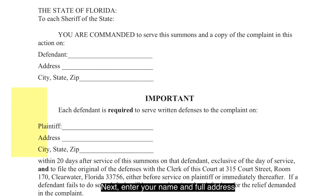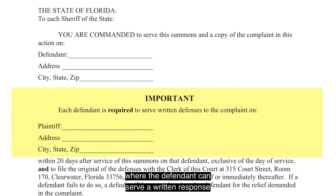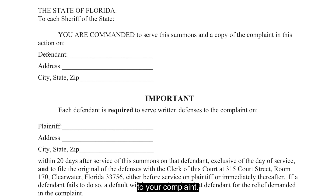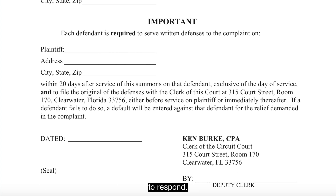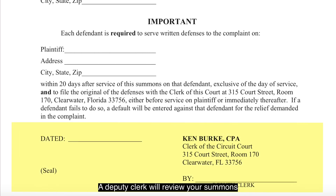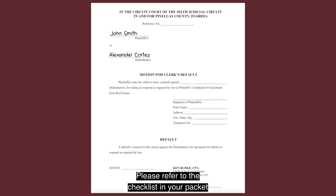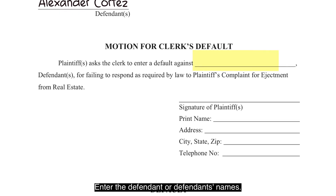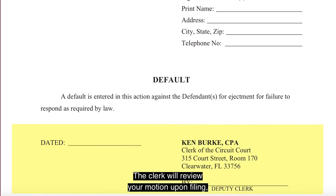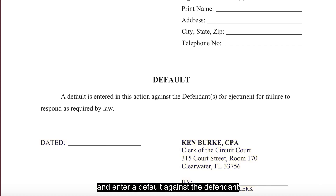Next, enter your name and full address where the defendant can serve a written response to your complaint. The defendant will have 20 days from the date of service to respond. Leave the clerk's field blank — a deputy clerk will review your summons and issue it if all requirements are met. Depending on the defendant's response, you may need to file a motion for default. Please refer to the checklist in your packet for more information. Enter the defendant's name and leave the clerk's space blank. The clerk will review your motion upon filing and enter a default against the defendant if all requirements are met.